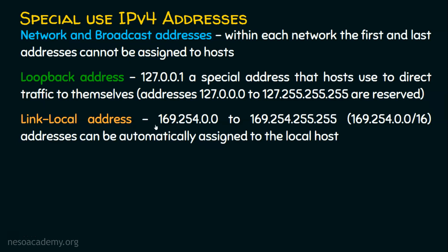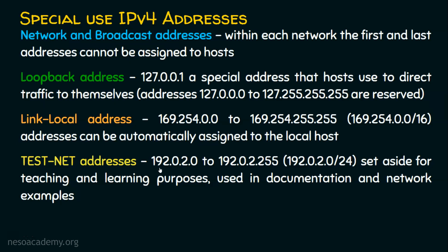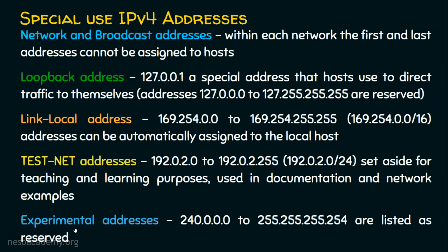The next special use address is the link-local address range: 169.254.0.0 to 169.254.255.255. These addresses are automatically assigned to the local host and cannot be manually used — we will cover this further when discussing DHCP. We also have test net addresses: 192.0.2.0 to 192.0.2.255, which are set aside for teaching, learning, documentation, and network examples. Finally, there are the Class E experimental addresses: 240.0.0.0 to 255.255.255.254, listed as reserved. Note the range ends at 255.255.255.254, because 255.255.255.255 is the broadcast address.